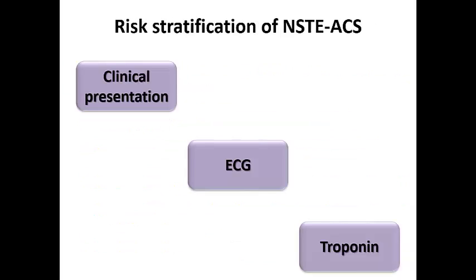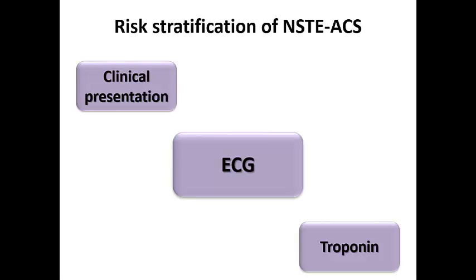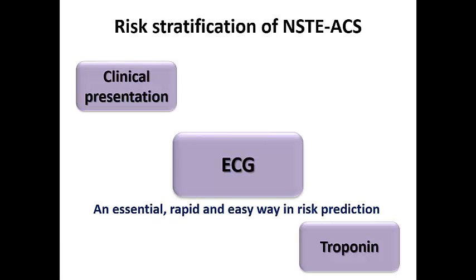In risk stratification of non-ST elevation, we depend on three major items: clinical presentation, ECG, and troponin. We are focusing here on the ECG rather than clinical presentation or troponin because this is an ECG course. ECG is an essential, rapid, and easy way in risk prediction.